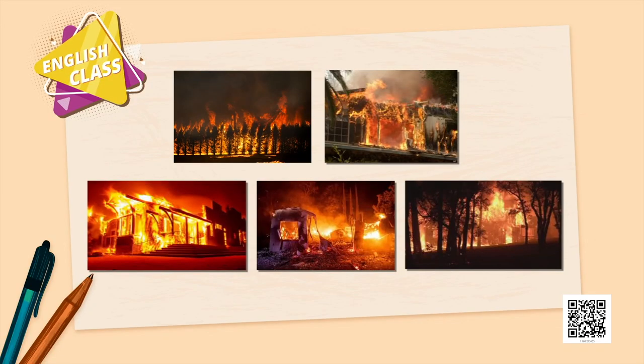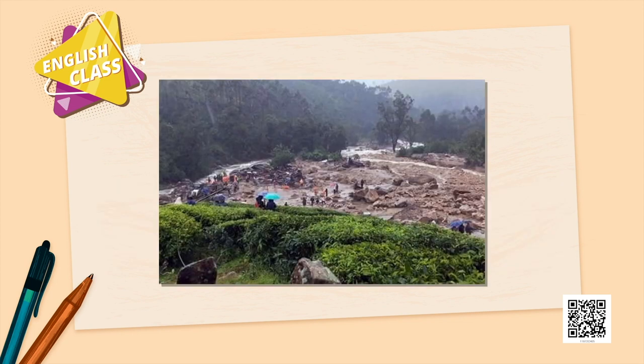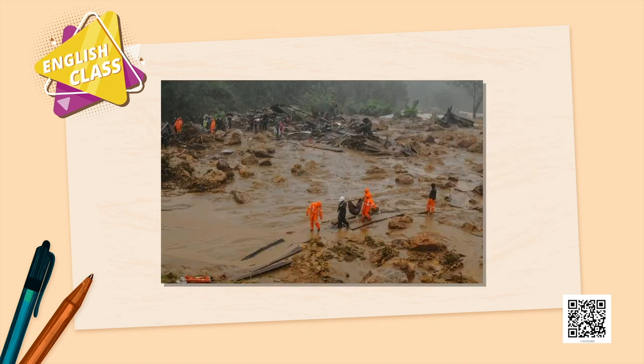Before we move on to read the lesson, let us watch some visuals of what is happening in America, what happened in Australia last year, and what happened in August 2020 in Kerala and in Himachal/Uttaranchal. Some images are from the California fire currently ravaging, some are from Australia where it took a long time to put the fires out, and the Kerala landslide in Rajigiri killed more than 100 people — workers and labourers buried in the mud because the hills could not hold.